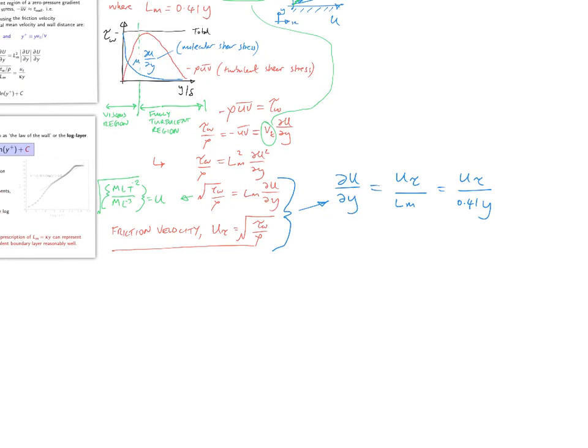So we draw this out, and we have du/dy is equal to u tau divided by the mixing length, or u tau divided by 0.41y. And this is our universal law.